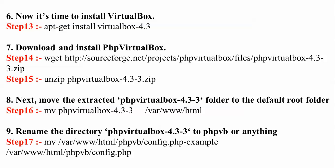Steps 6 through 9 cover the next procedures. Step 6 is installing VirtualBox; step 7 is downloading and installing phpVirtualBox; steps 14 and 15 are installing and unzipping; step 8 is moving the downloaded extracted folder into the web root. The phpVirtualBox package comes with version 4.3.3 and will be moved to the default web root, then renamed from 'phpvirtualbox-4.3.3' to 'phpvb'.